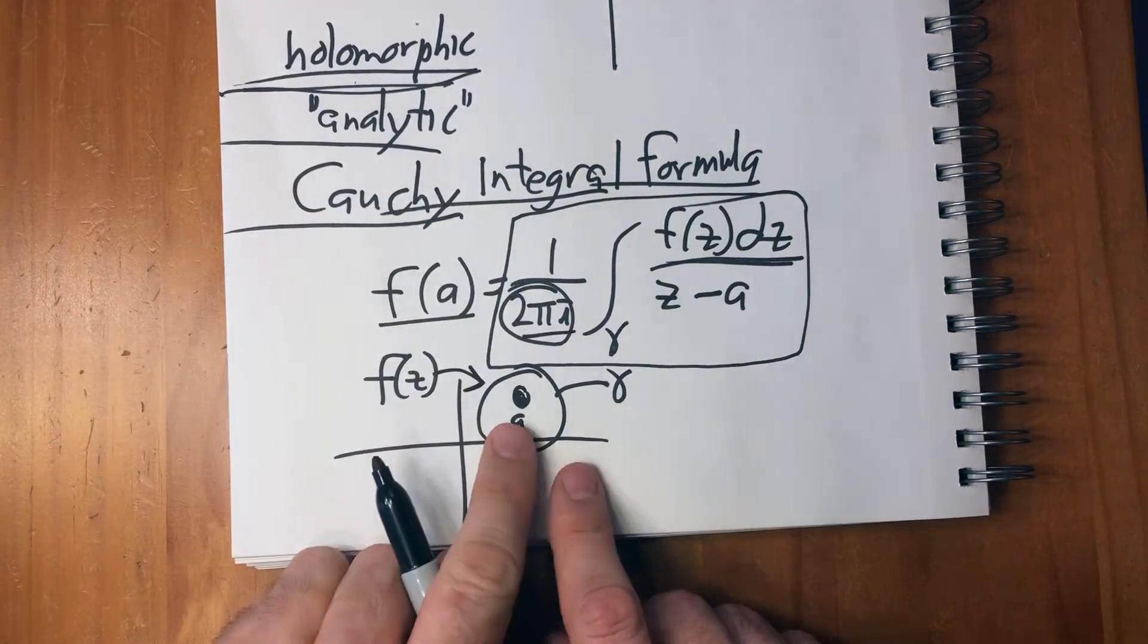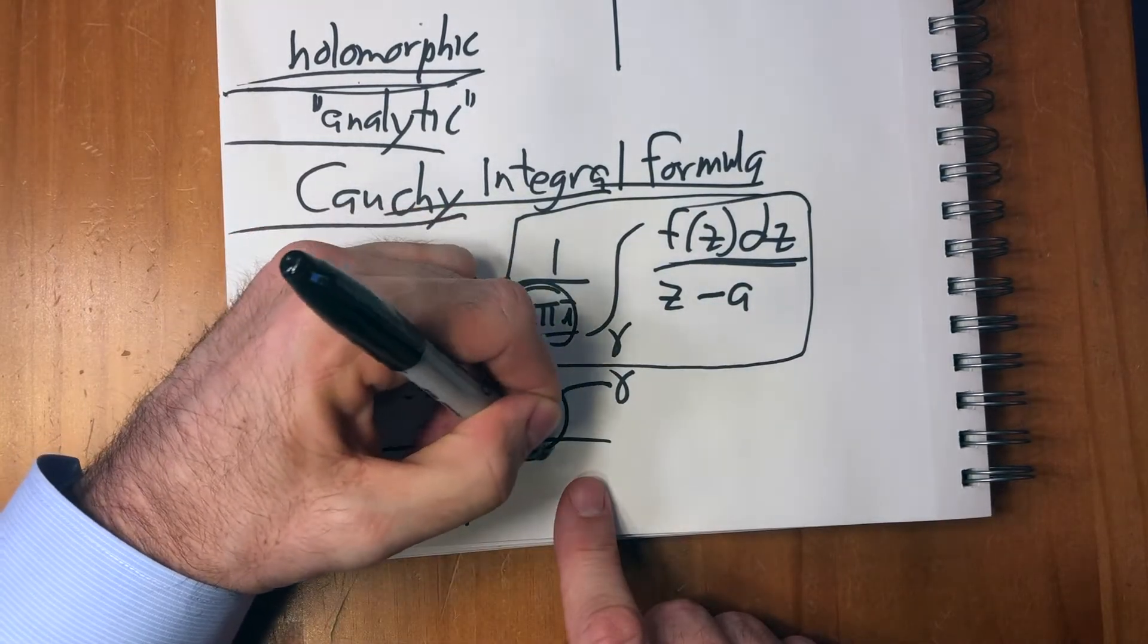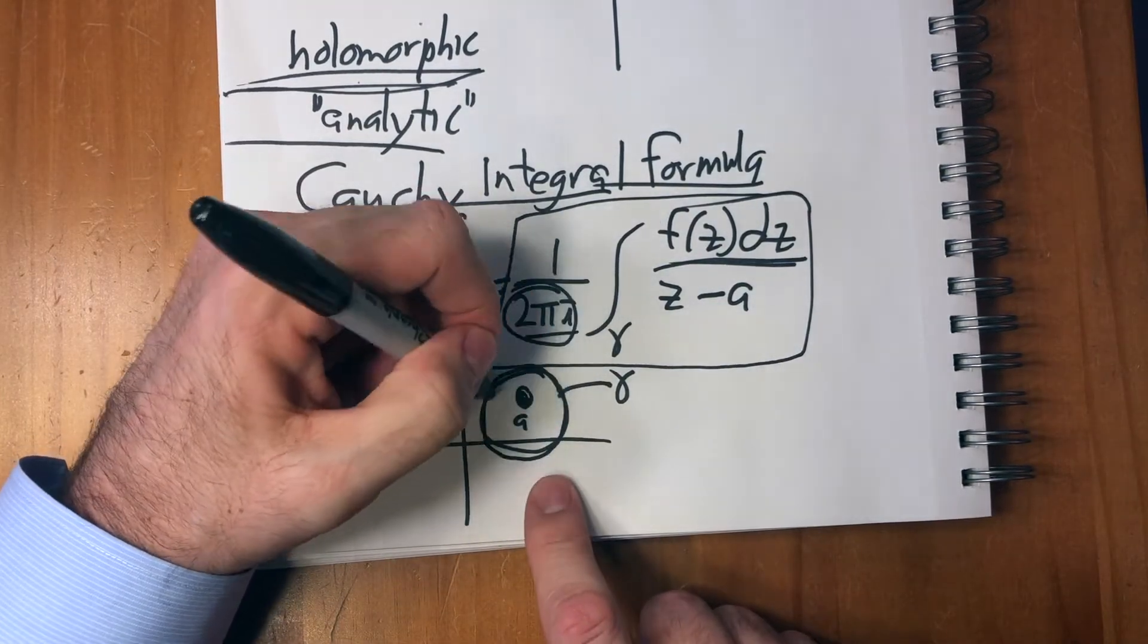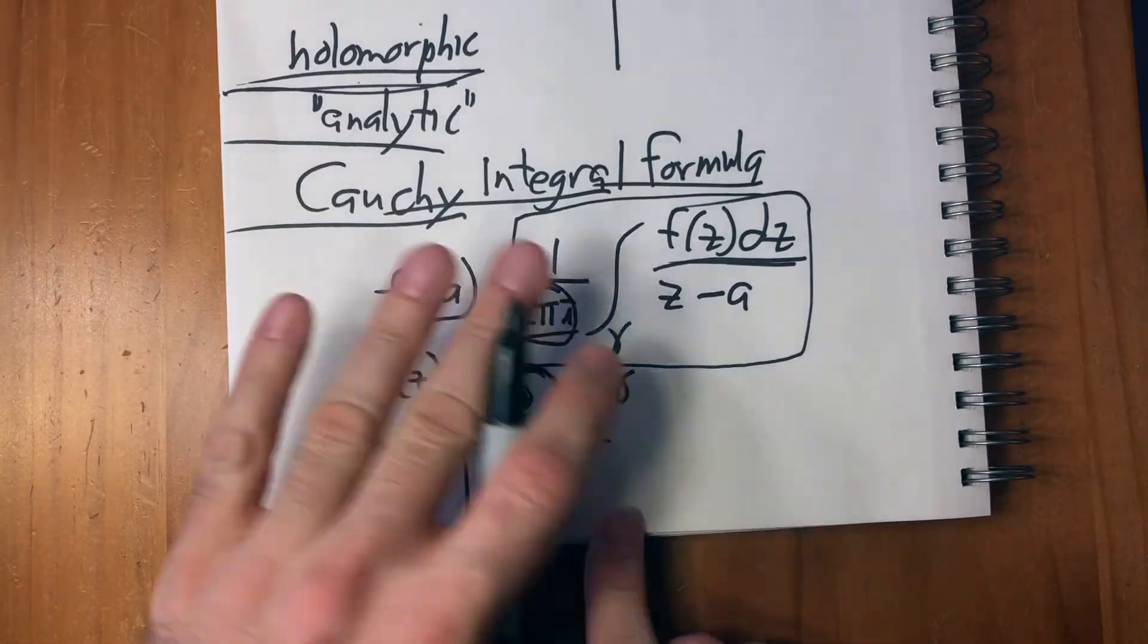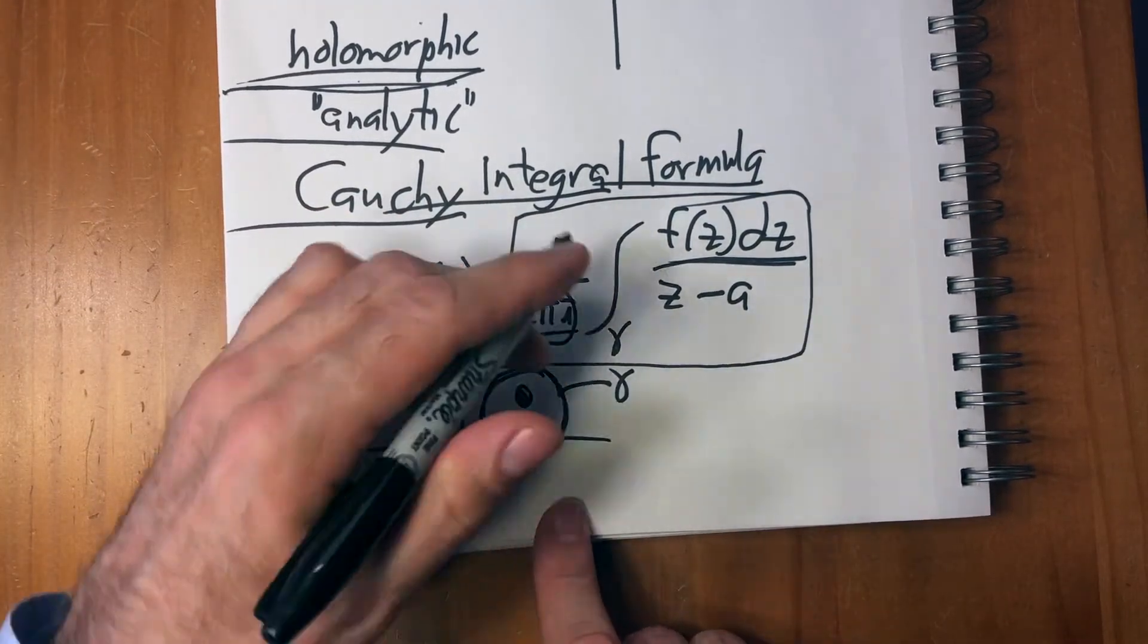So what we're doing here is we know, forget about A for a second, this is F of Z. We know that the line integral around gamma is zero. Forget about A, if this is a continuous function, a differentiable function. We know that it's, that this is zero.